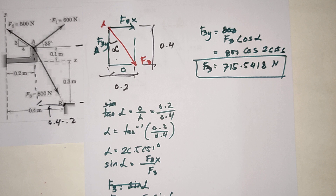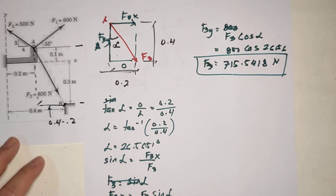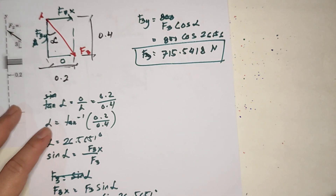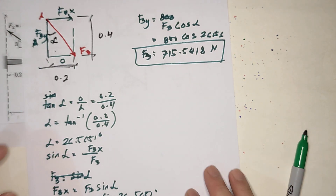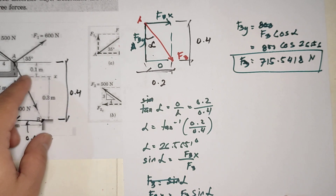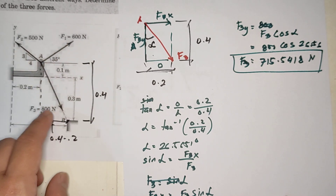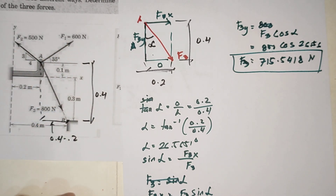So that is the X and Y components of the three forces. You can also use vector notation, but we'll discuss that later. That's it for today — we found the scalar values F1, F2, and F3.